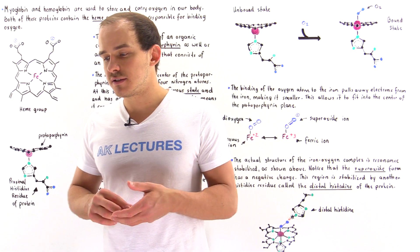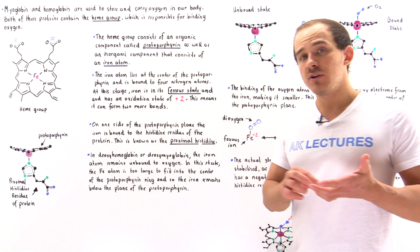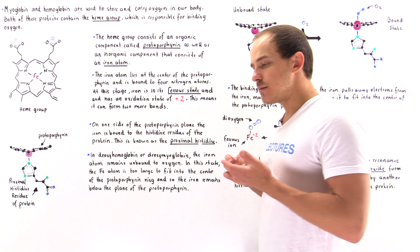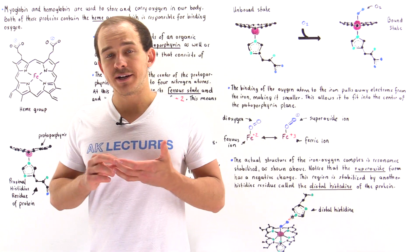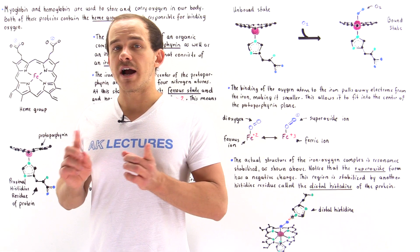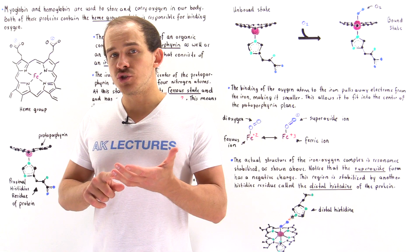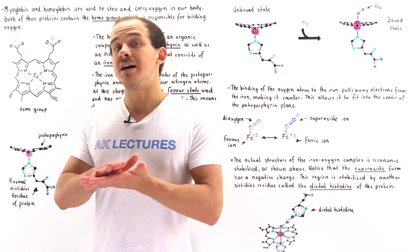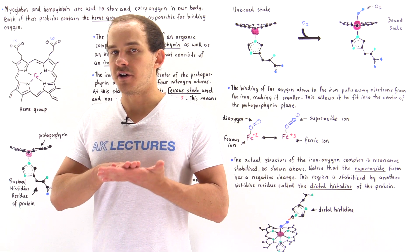They deliver oxygen to the cells of our body, and these two proteins are myoglobin and hemoglobin. Myoglobin is a protein that consists of a single polypeptide chain, and it is found in the muscle cells of our body. It is used by our muscle cells to store oxygen and give the muscle cells the oxygen when the concentration of oxygen becomes very, very low.